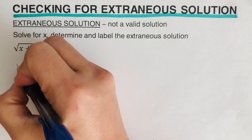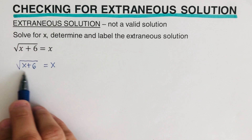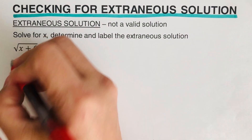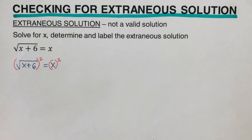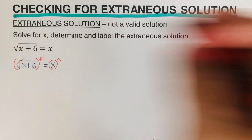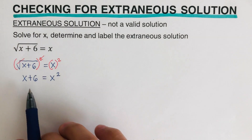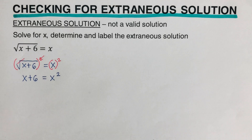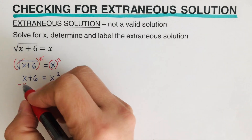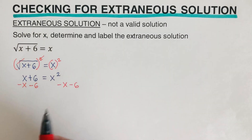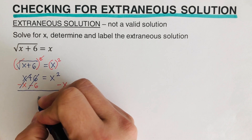So we have the equation: square root of x plus six equals x. This squared expression is already isolated by itself, so we're good. We square both sides to undo the square root — when we square one side, we square the other side as well. We can cross out the squared and the square root, leaving us with x plus six equals x squared. Then we make one side equal to zero, subtracting x and subtracting six from both sides.